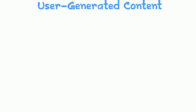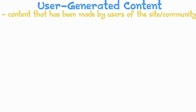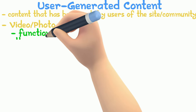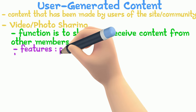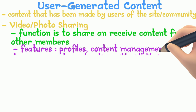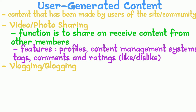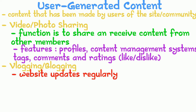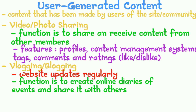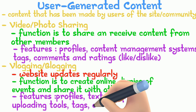User Generated Content is content made by users of the site or community. Video or photo sharing sites function to share and receive content from other members — features include profiles, content management systems, tags, comments, and ratings. Blogging or vlogging: a blog is a regularly updated website; a vlog is a video blog. Their function is to create online diaries of events and share them. Features include profiles, text editors, uploading tools, tags, comments, and ratings.